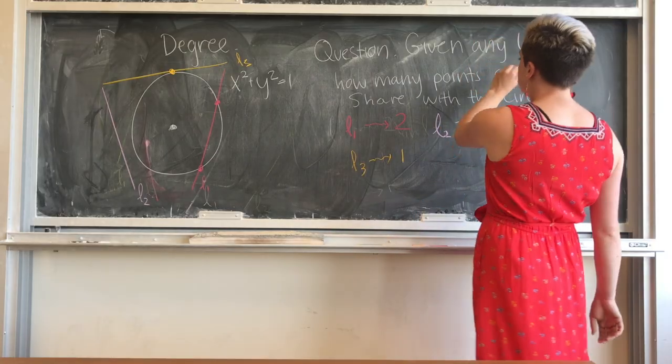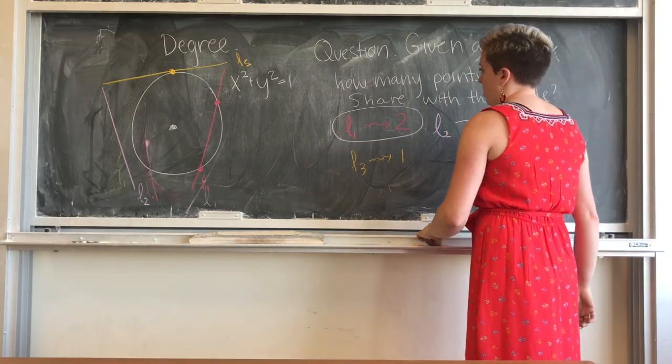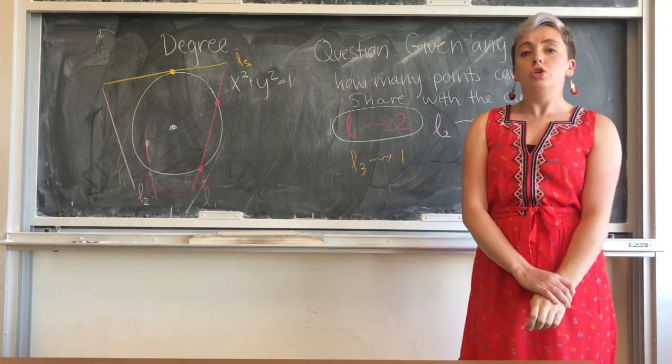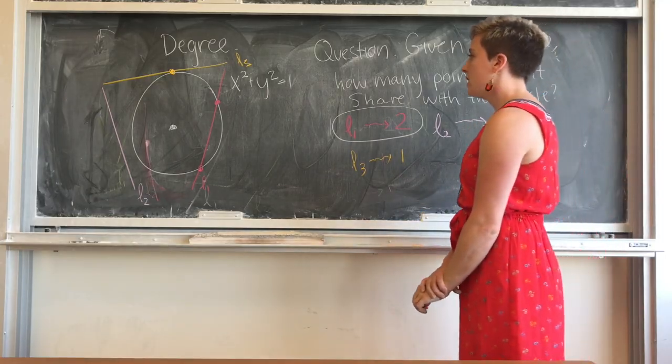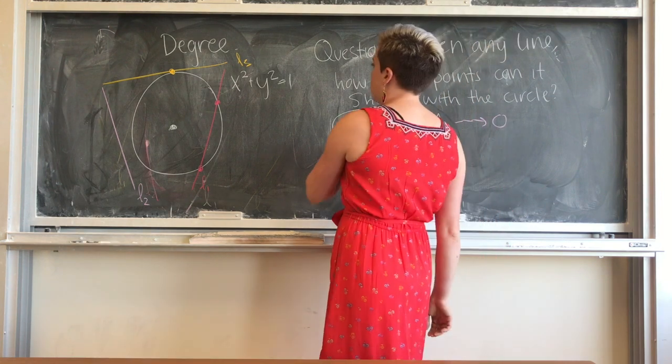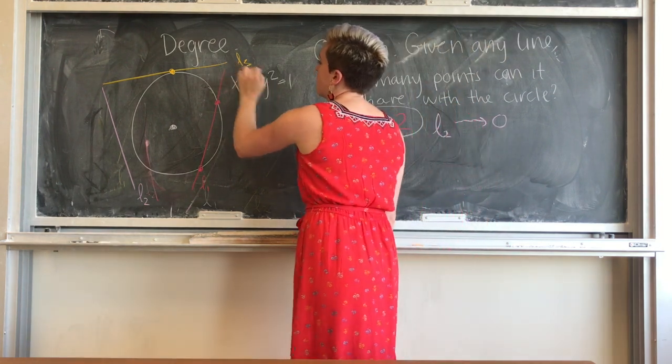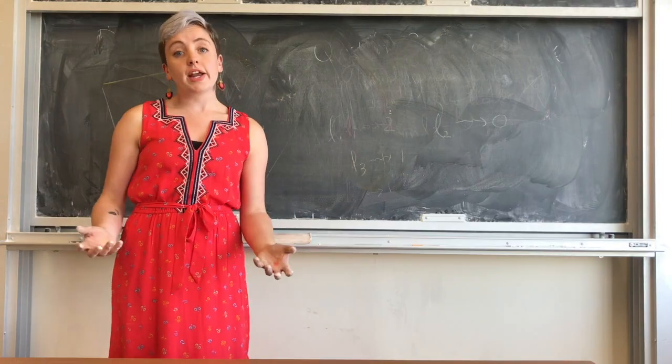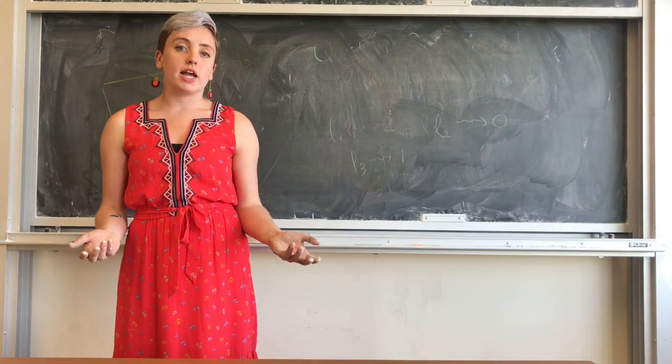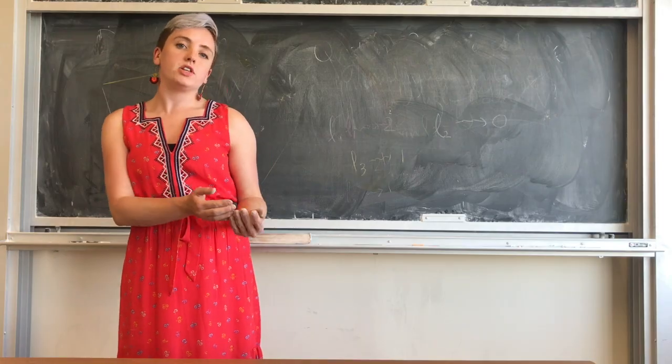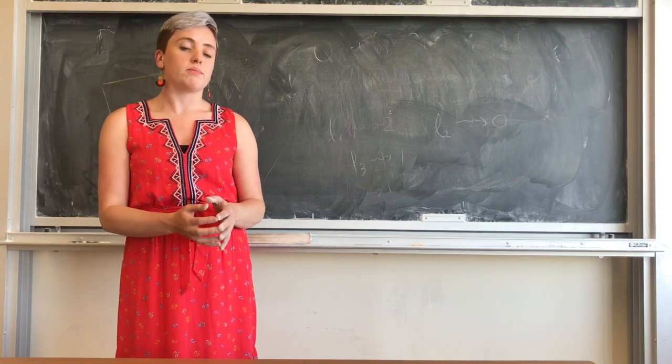The answer to our question is two. A line can share at most two points with the circle. It turns out that that number two is exactly equal to the exponent in my equation.